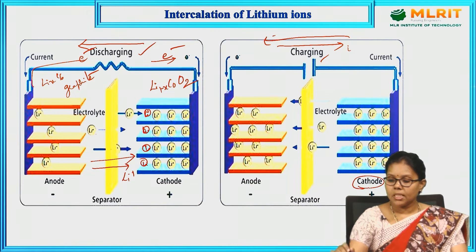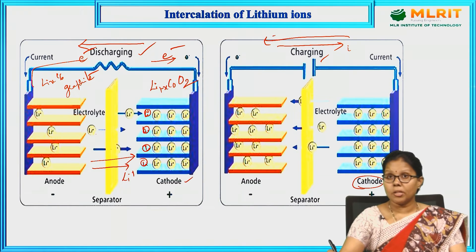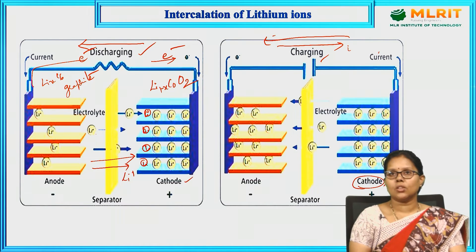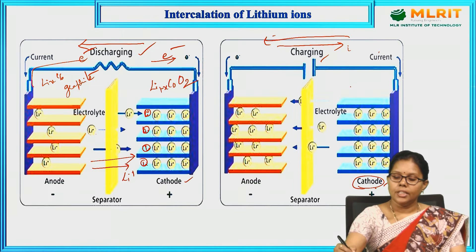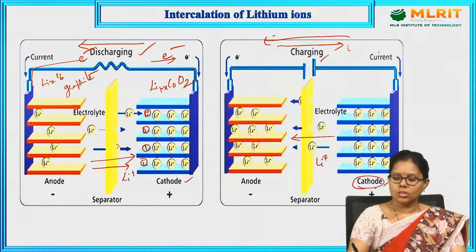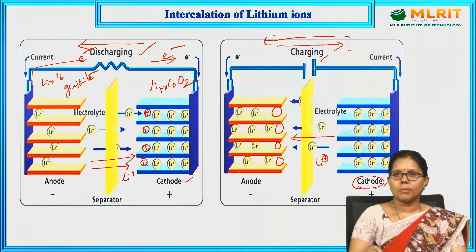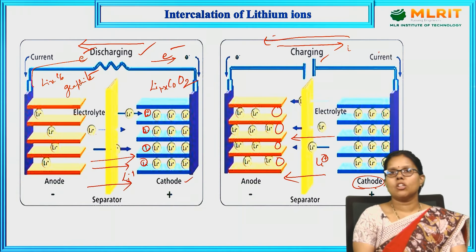During charging, the reverse reaction takes place at the cathode due to the external current being supplied. Oxidation takes place at the cathode and lithium ions are generated. All lithium ions move from cathode to anode into the empty interstitial sites. This movement of lithium ions from cathode to anode is also called intercalation.